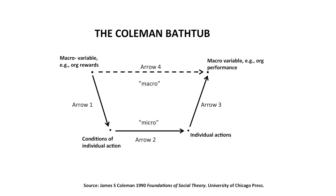These macro-level constructs should be reduced, according to the microfoundations idea, to the actions and interactions of lower-level organisational members. For example, we may want to understand firm performance in terms of, or partially in terms of, the actions and interactions of individuals inside the firm. So in this particular case, we're trying to understand firm performance — the northeastern node — in terms of individual behaviours and individual interaction.